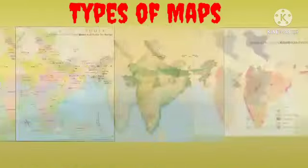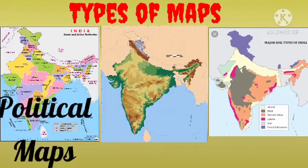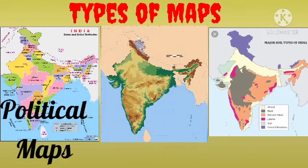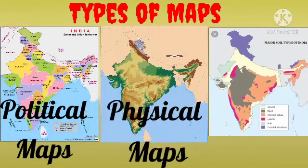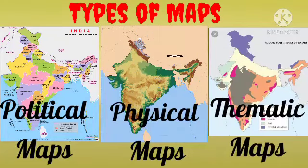Now, types of maps. There are basically three types of maps: political maps, physical maps, and thematic maps.